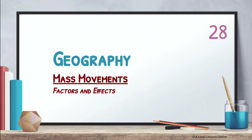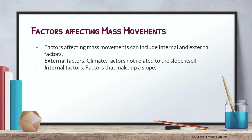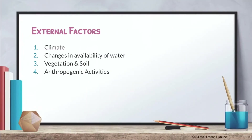Let's jump into factors. We're going to look at internal and external factors. Internal factors refer to things like geologic structure — anything that makes up the slope itself. External factors are things the slope does not inherently possess, such as climate. So external factors include climate, changes in availability of water, vegetation and soil, and anthropogenic activities.